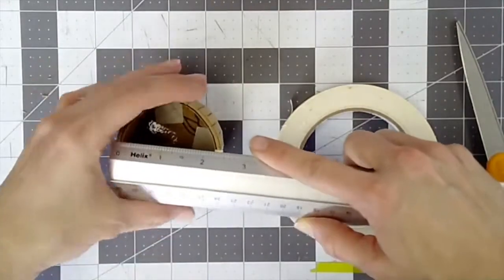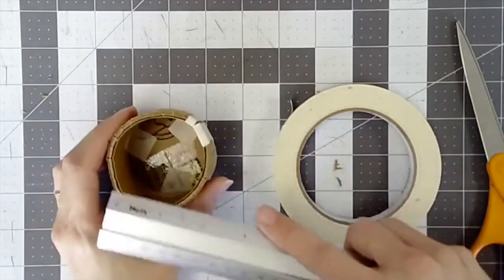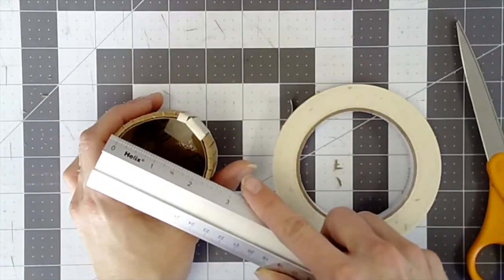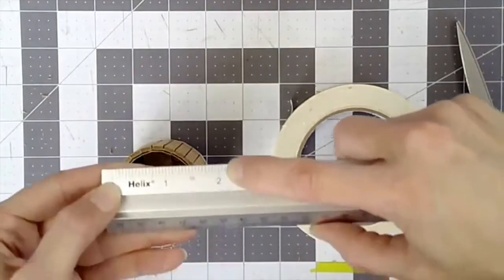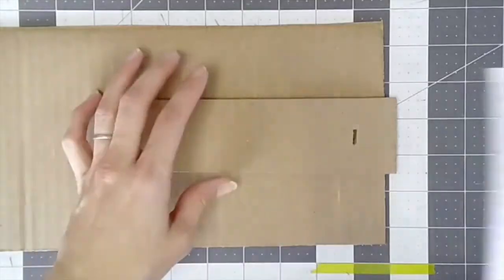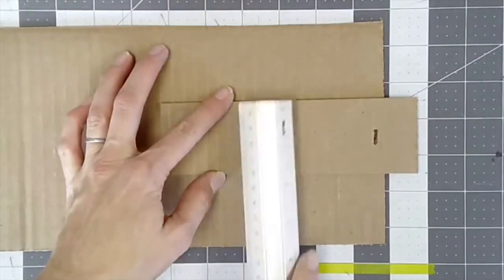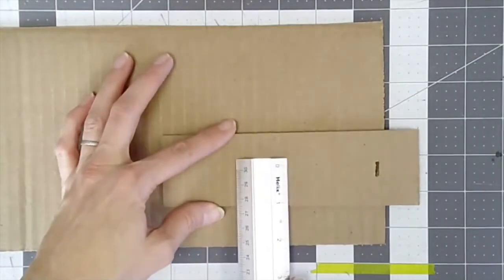Measure the diameter of the cylinder. To make a cone, make a circle that's larger than the diameter of the cylinder. The radius of the circle for the cone will be 2 inches.